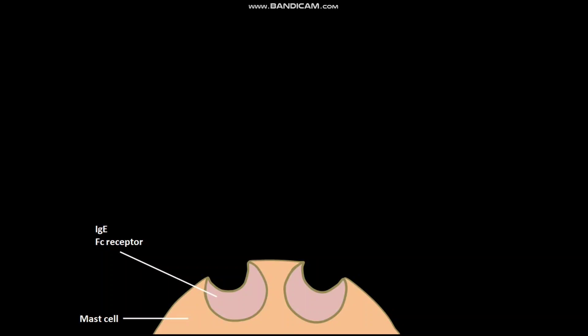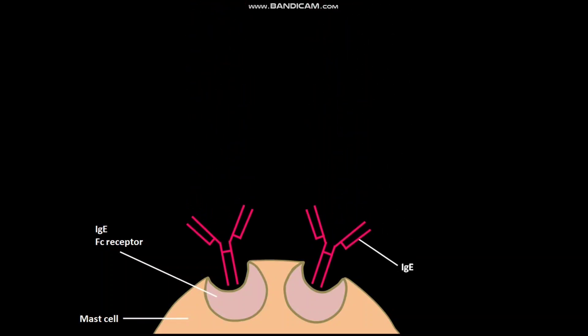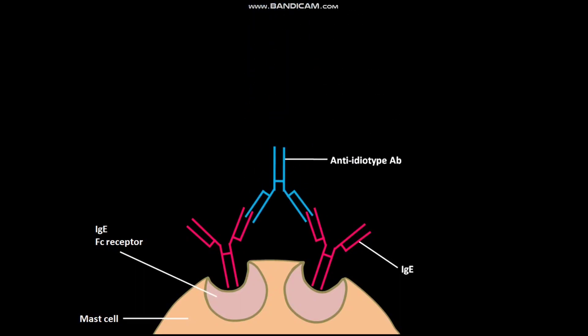In another method of mast cell degranulation by antibody cross-linkage of IgE, IgEs bind to the IgE Fc receptors present on the surface of the mast cell. The anti-idiotype antibody then binds to the bound IgEs in such a way that the bound IgEs are cross-linked by the anti-idiotype antibody. The mast cell then undergoes degranulation.